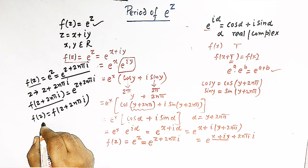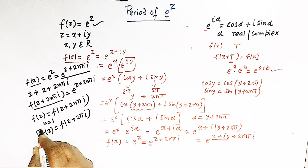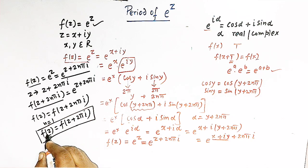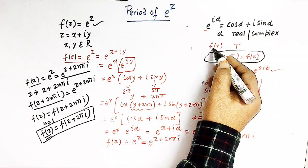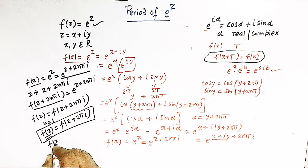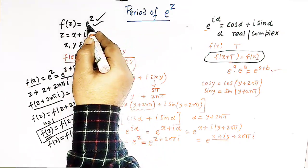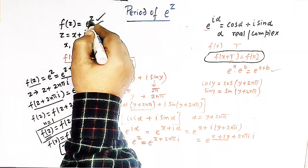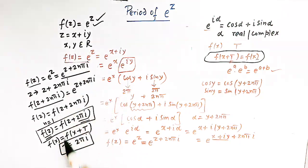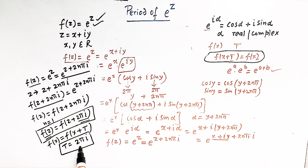Now if we replace n by 1, we can write f of z equal to f of z plus 2 pi i. This suggests that the period of the function f of z is given by 2 pi i, using the definition that a function f of x has period t if f of x equals f of x plus t. So the period of the exponential function e raised to z is t equal to 2 pi i. From here we can see that when z is a complex number, the period of e raised to z is also a complex number, namely 2 pi i.